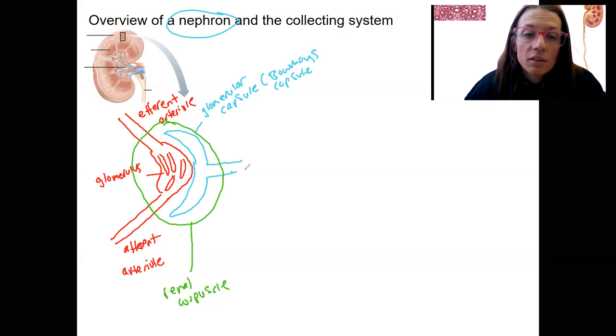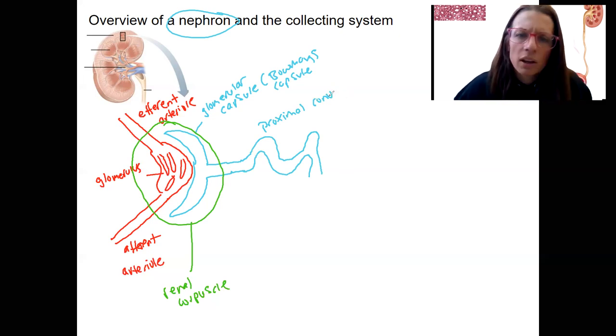Once the filtrate has formed, it's going to enter a whole series of tubes that make up the nephron. The first tube is the proximal convoluted tubule. Convoluted means twisted, right? And it's proximal to where filtration occurred.